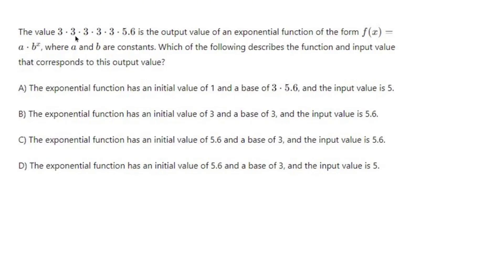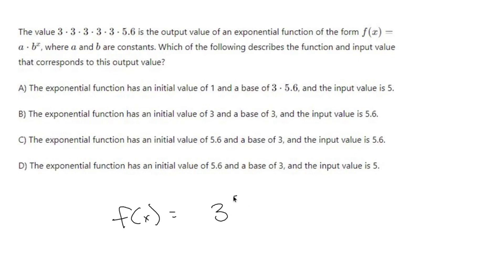The value 3 times 3 times 3 times 3 times 3 times 5.6 is the output value of an exponential function of the form f of x equals a times b to the x, where a and b are constants. We have f of x equals 3 times 3 times 3 times 3 times 3 — so that's 5 of them — and our initial value is going to be 5.6.